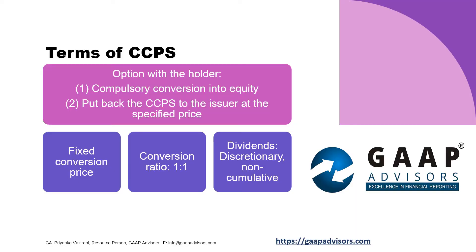So, in this case, the CCPS in question are issued by a corporate entity to the investors on these terms: the instruments are compulsorily convertible into equity shares in the ratio of 1 to 1 at the option of the holder. The agreement also has an exit clause, wherein the issuer needs to buy back the CCPS at a specified price at the option of the holder. The CCPS carry discretionary non-cumulative dividends, and the amount per share on conversion is fixed.